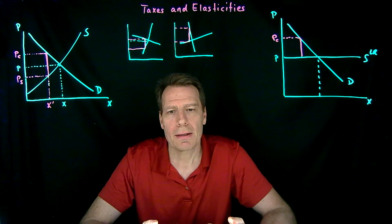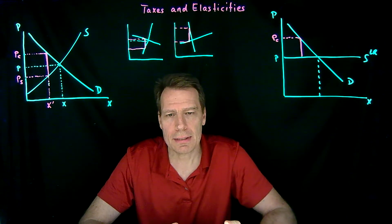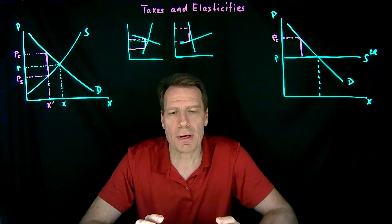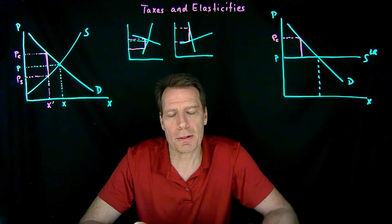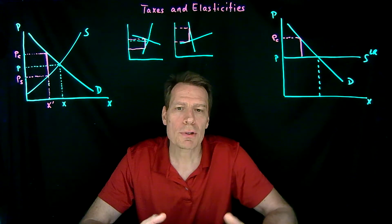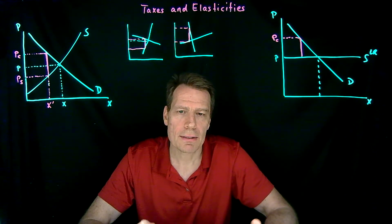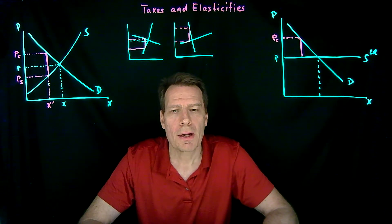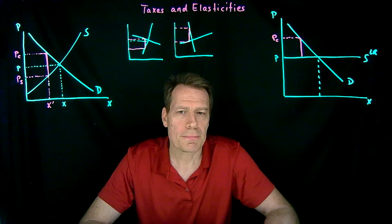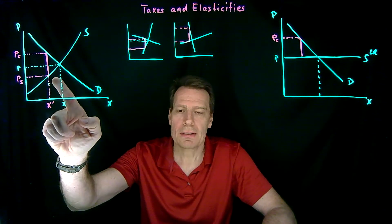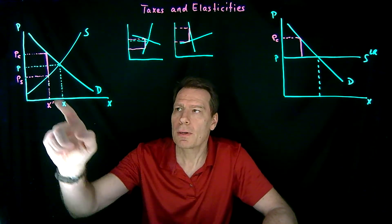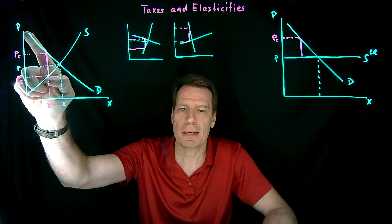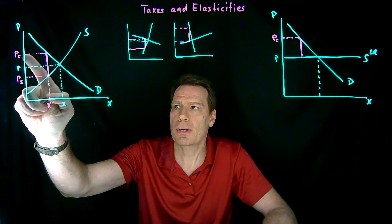That's one lesson about elasticities and tax policy. But elasticities also have to do with other aspects of tax policy — specifically, how much revenue we can raise from the tax and how much of a deadweight loss the tax will produce. So let's start with deadweight loss and find it in this picture. Consumers initially made a surplus above their price up to the demand curve.